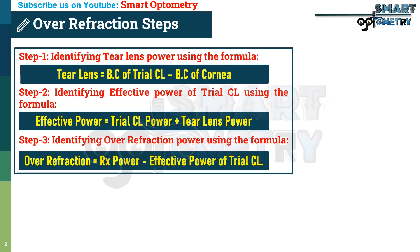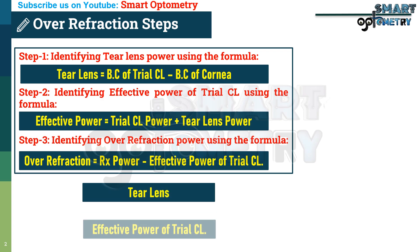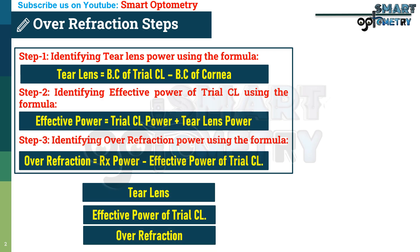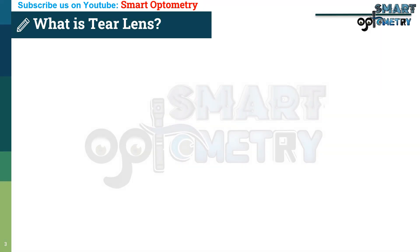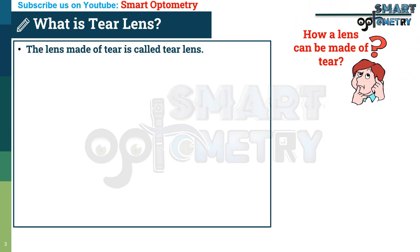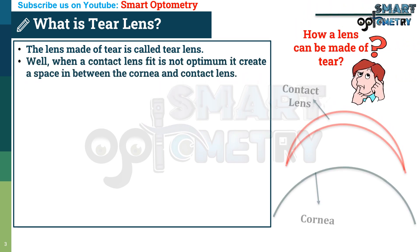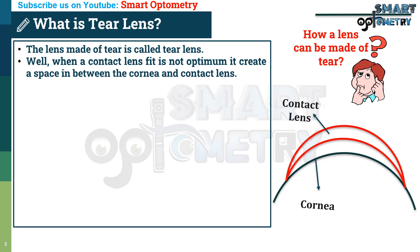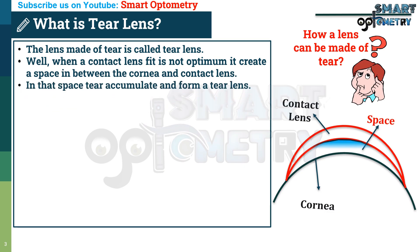Before starting those steps, we need to know some basics about tear lens, effective power of contact lens, and over-refraction. What is tear lens? The lens made of tear is called tear lens. When a contact lens fit is not optimum, it creates a space between the cornea and the contact lens. In that space, tear accumulates and forms a tear lens.